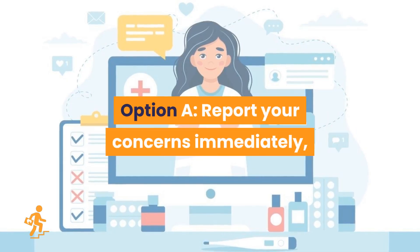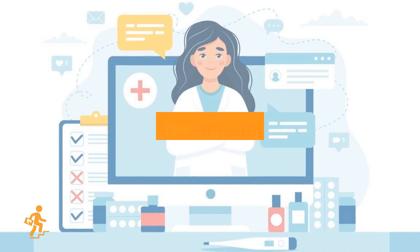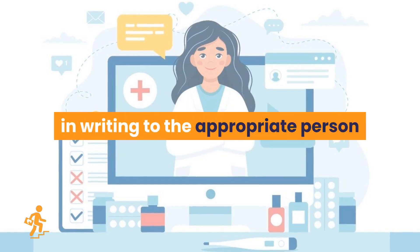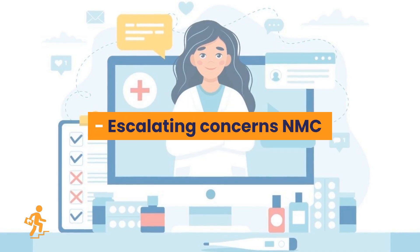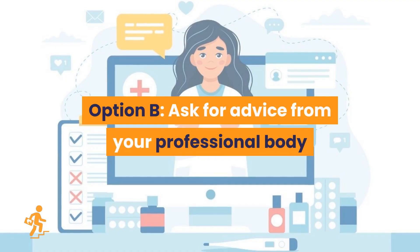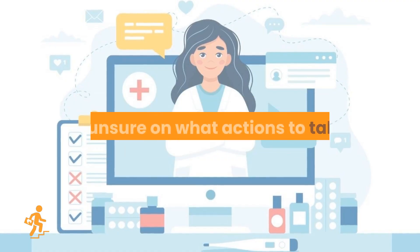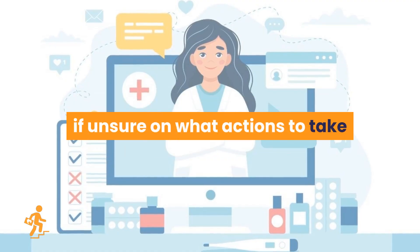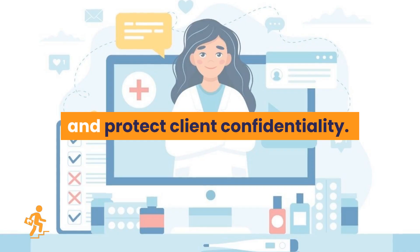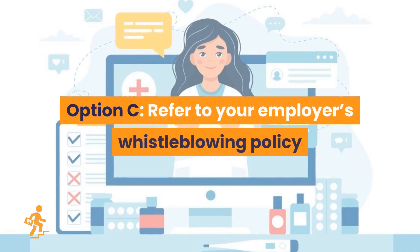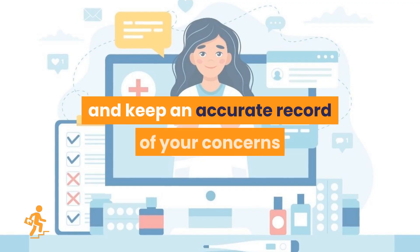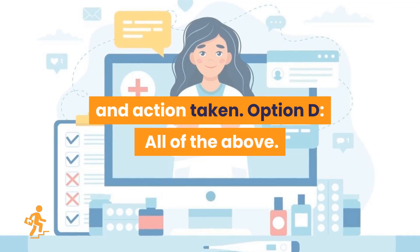Option A: Report your concerns immediately, in writing to the appropriate person, escalating concerns to NMC. Option B: Ask for advice from your professional body if unsure on what actions to take, and protect client confidentiality. Option C: Refer to your employer's whistleblowing policy, and keep an accurate record of your concerns and action taken.